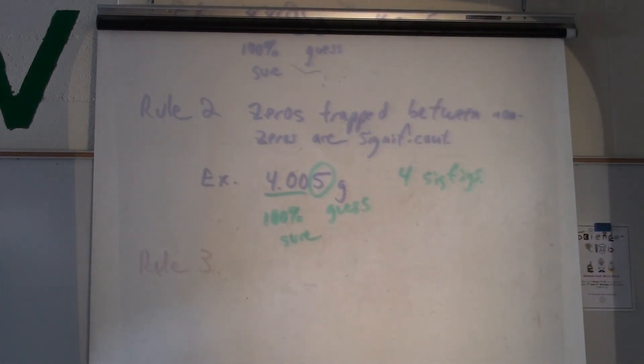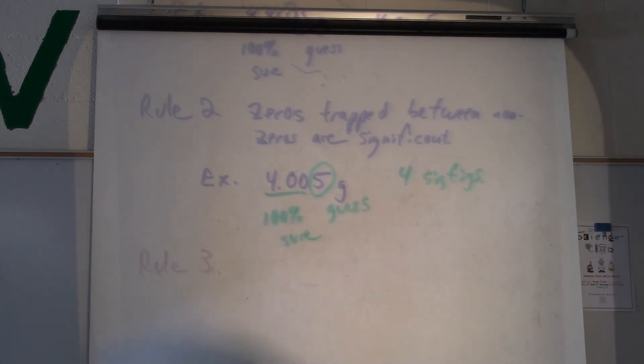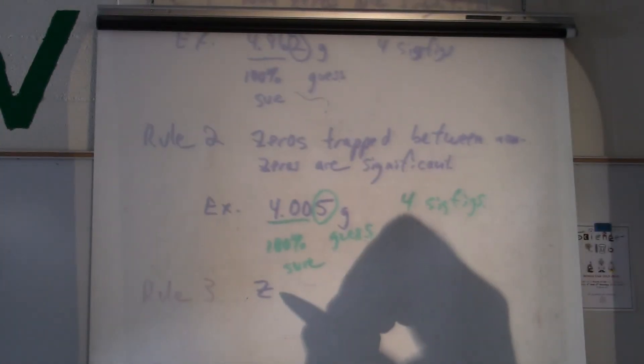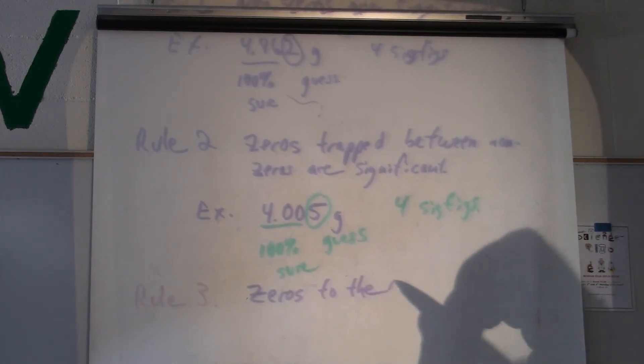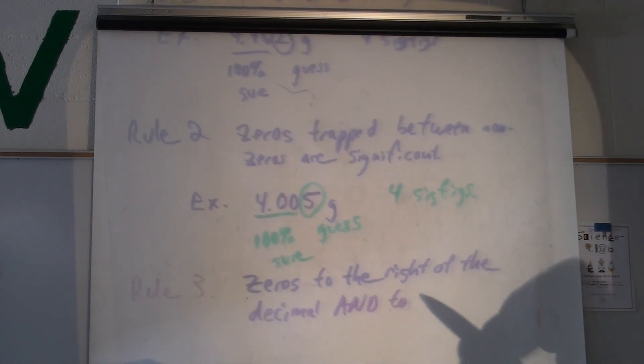So rule three, it says that zeros are different colors. Zeros to the right of the decimal and to the right of a non-zero are significant. Zeros to the right of the decimal and to the right of the decimal.